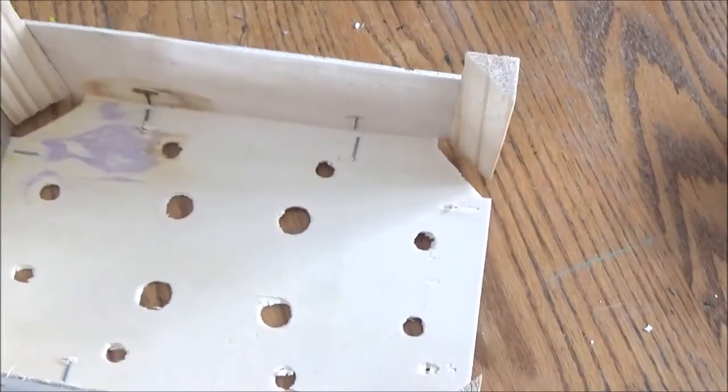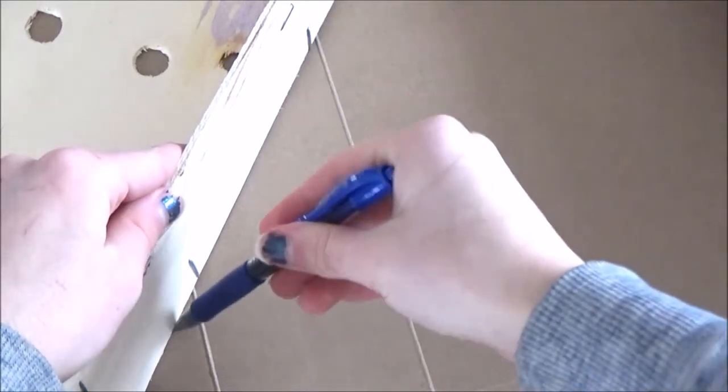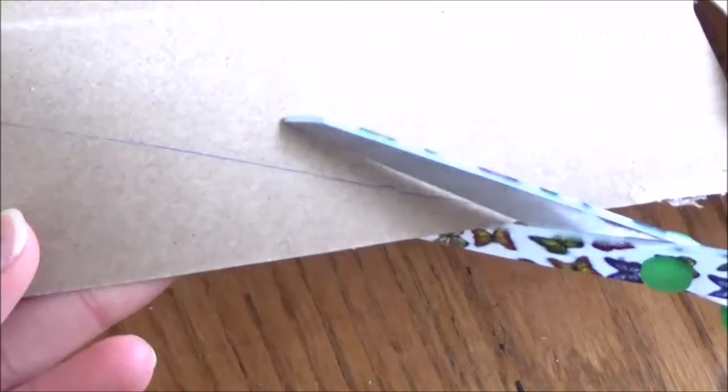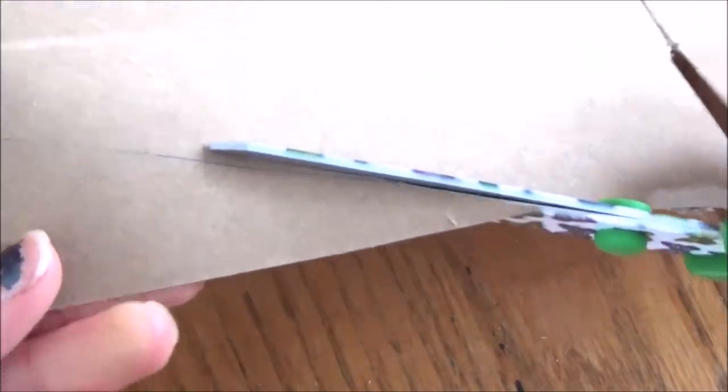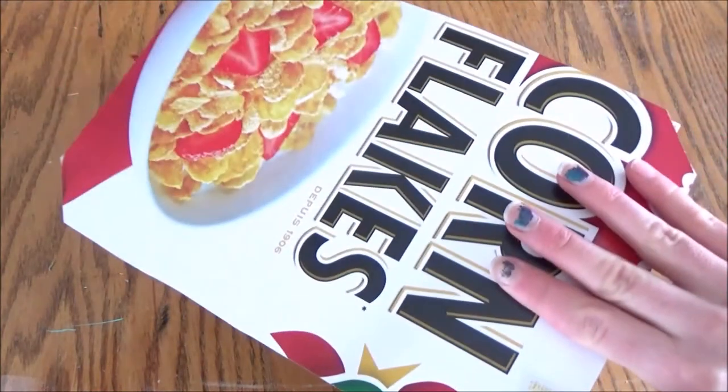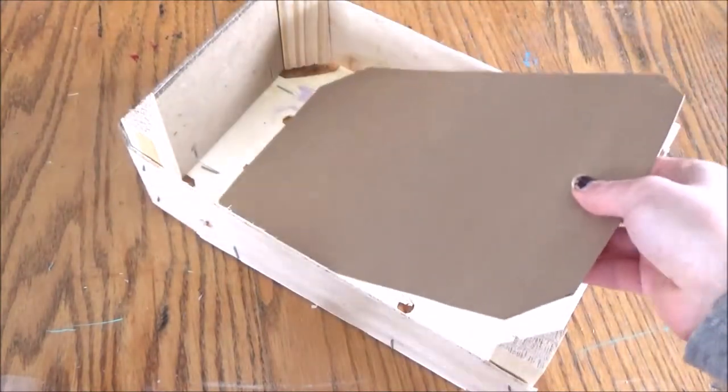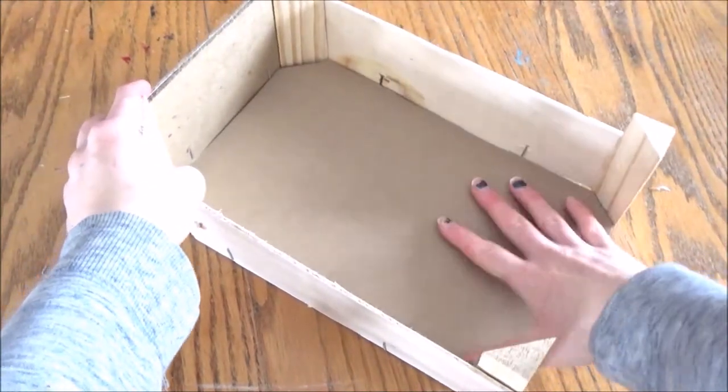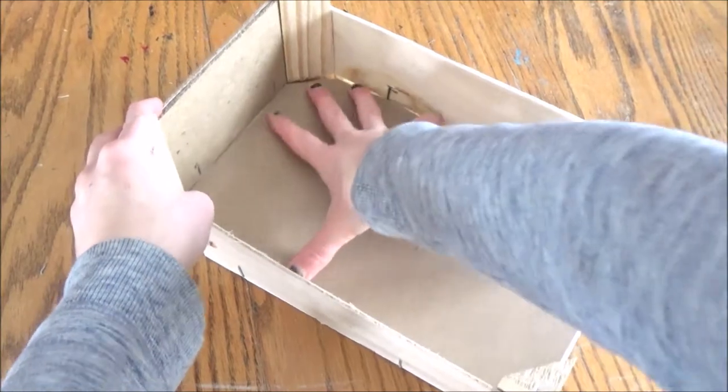After that you're going to trace and cut out a piece of cardboard from a very big cereal box or a pizza box and you're going to glue it onto the base of the orange crate. This way it won't scratch the Breyer's feet or anything like that and it'll all match and there won't be holes in the floor of your stall.